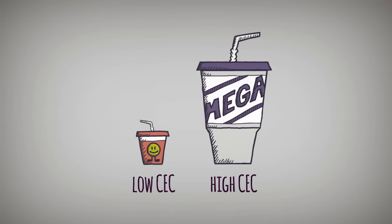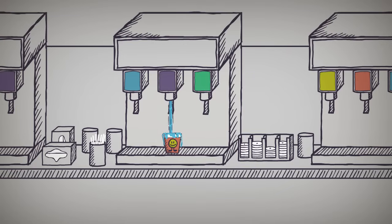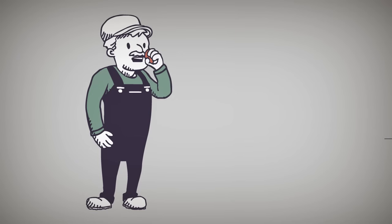That's because CEC is sort of like a cup size at a fast food joint. Some soils are supersized, but others have a kitty cup. Pouring too much will just cause a mess, but if you refill several times, you can still quench your thirst.